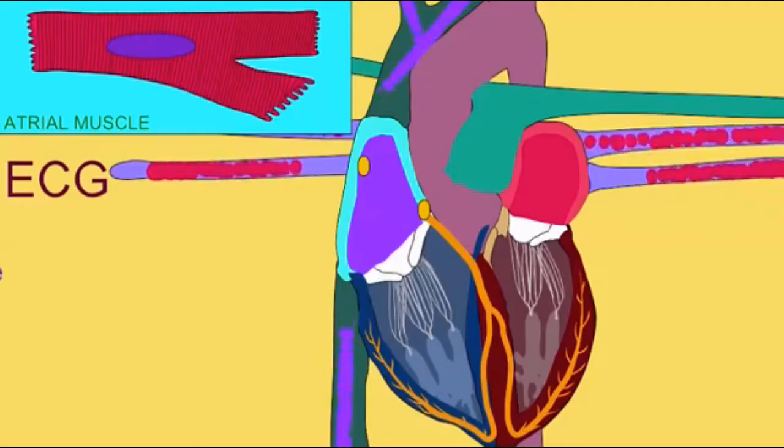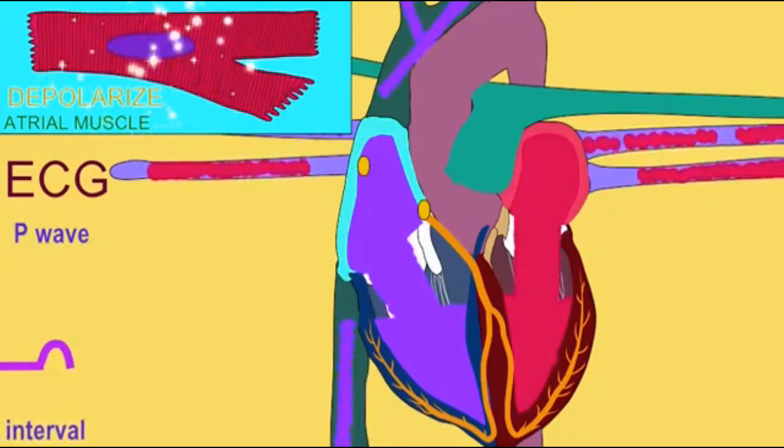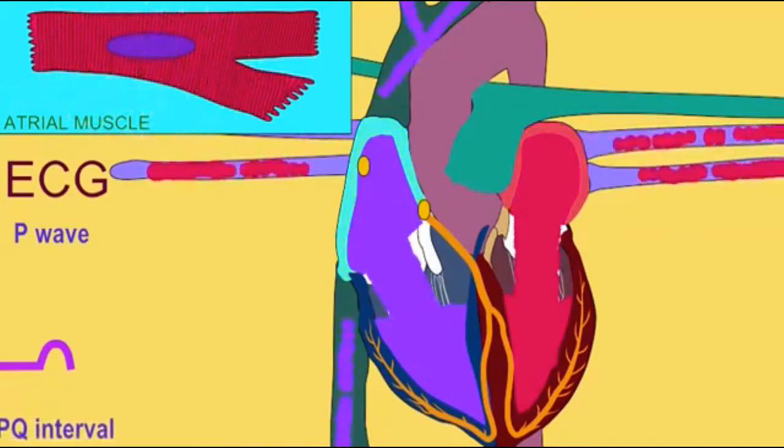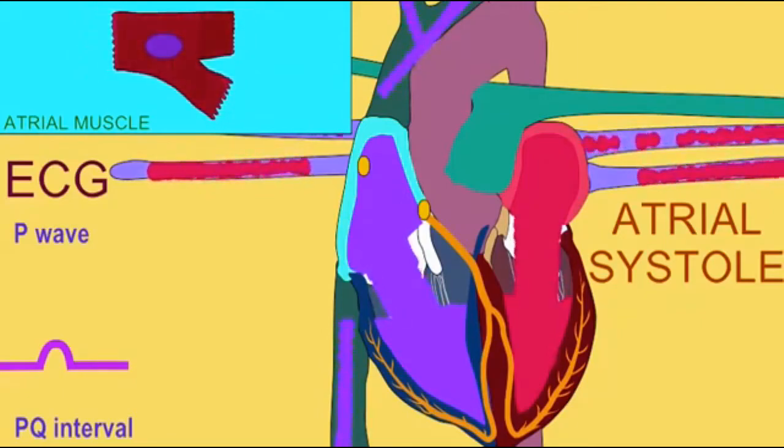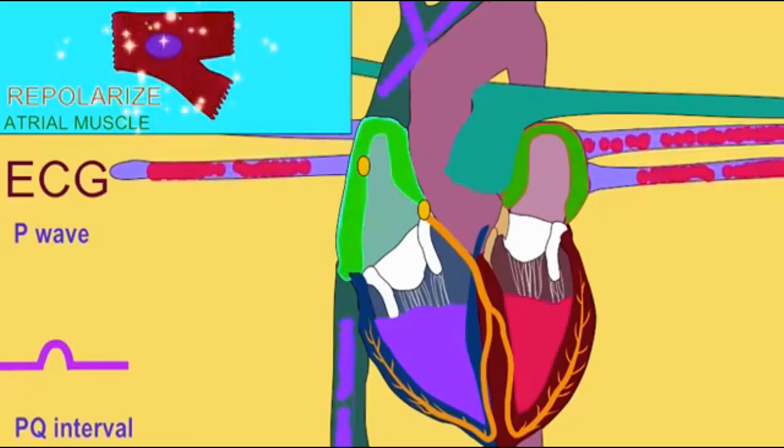Now we could flow with the pressure into the right ventricle or if you want to wait the right atrium will begin to squeeze using the muscle in the myocardium of its wall and it will push us into the right ventricle. Either way we'll end up in the right ventricle.